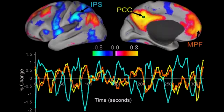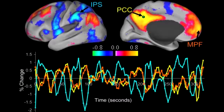Here is the activity map of someone's brain who is asked to lie still at rest in a brain imaging scanner. On the left is the side view of the brain, and on the right is the view from the midline. The colors indicate brain areas whose activities were highly correlated, as shown by the time courses below, color-coded to the brain areas.